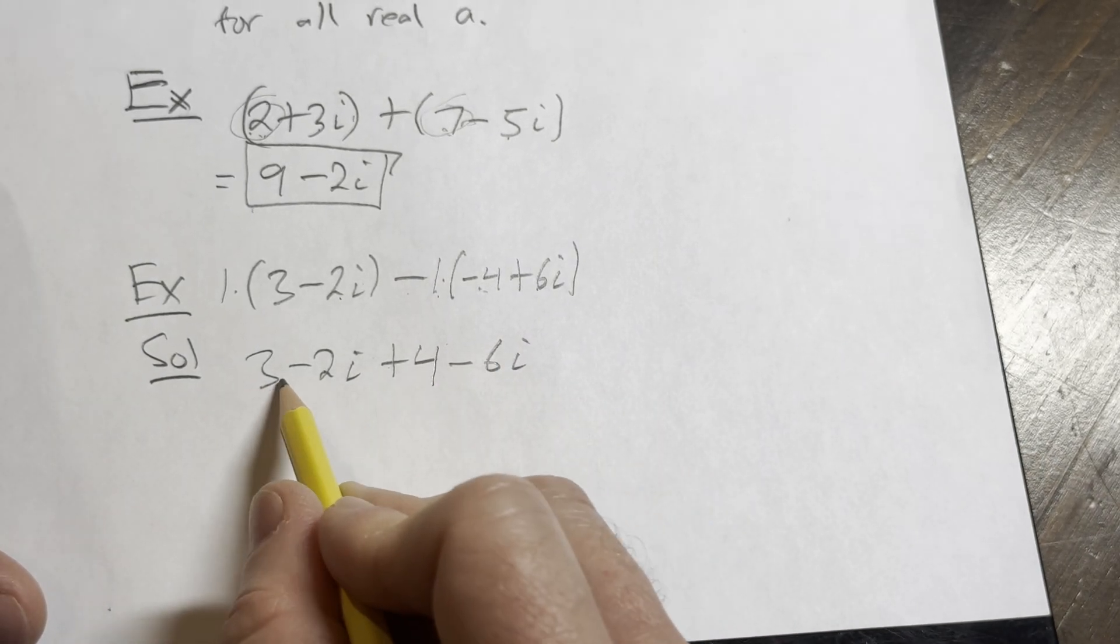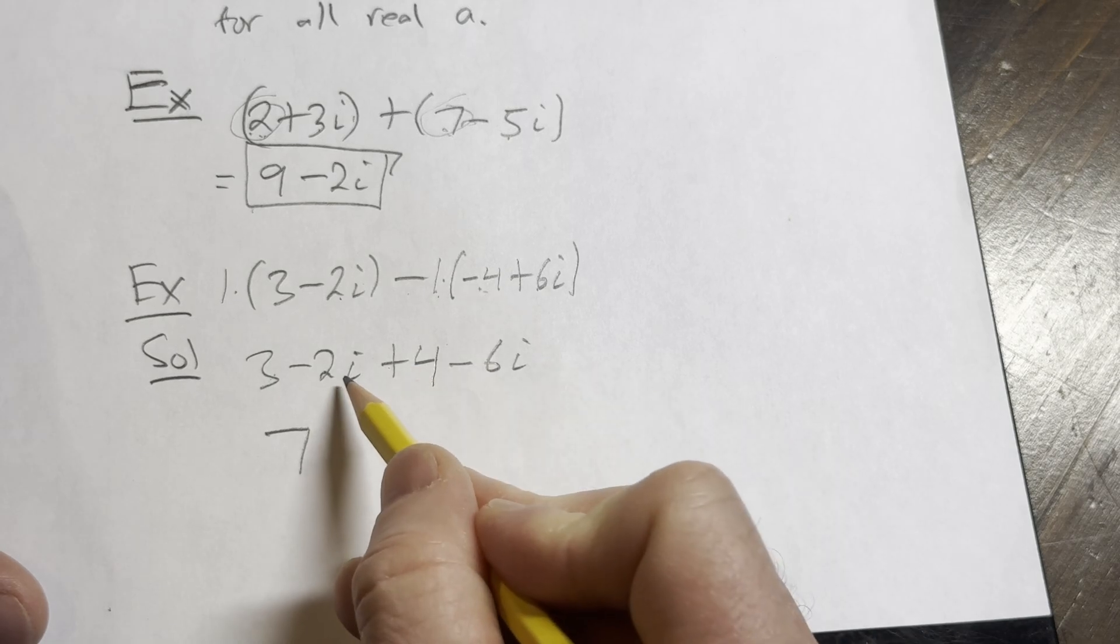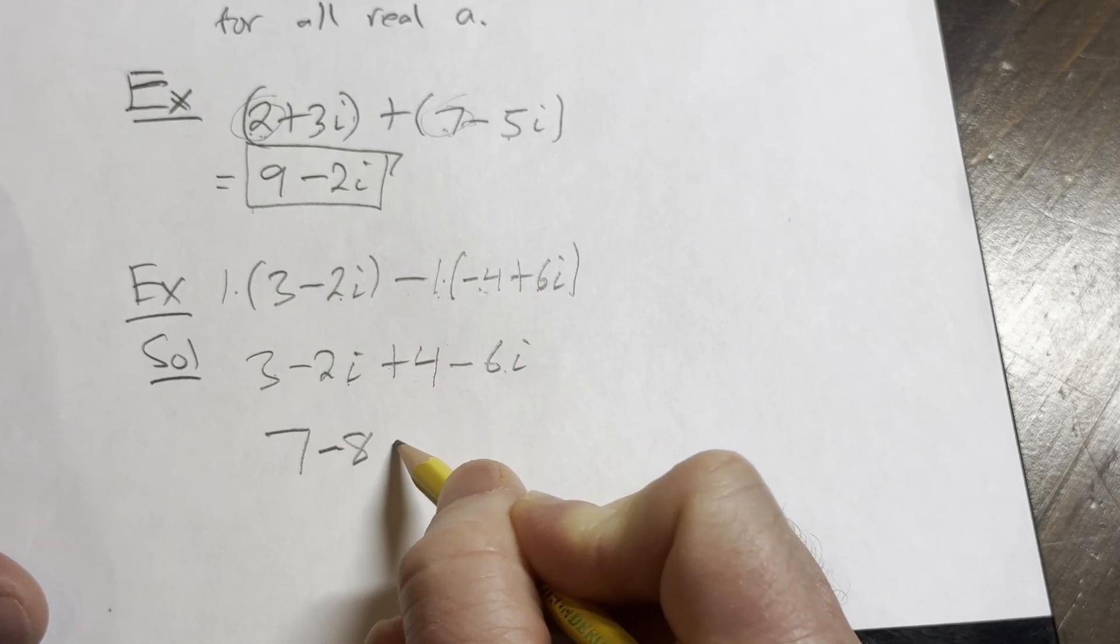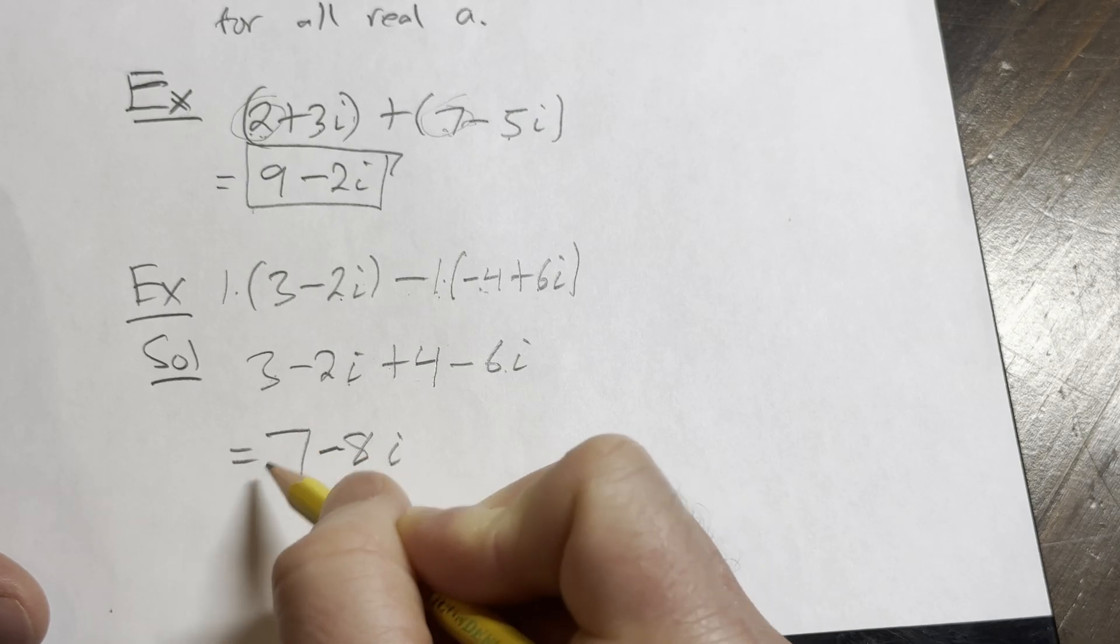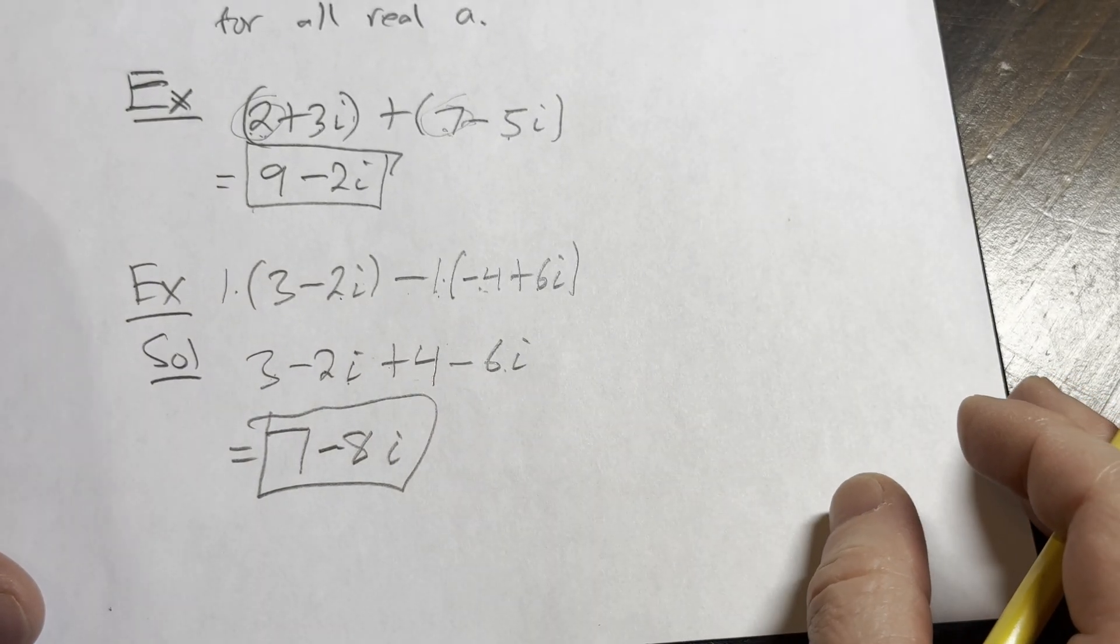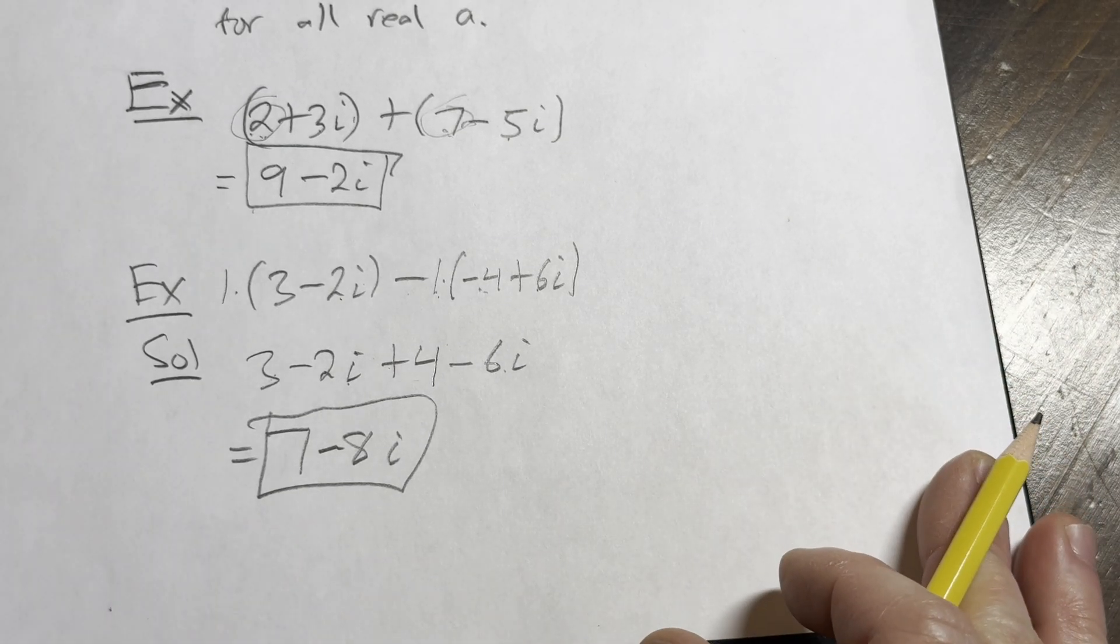Now you add the real numbers. Combine the real parts: 3 plus 4 is 7. And minus 2i minus 6i is minus 8i. So that would be the answer, 7 minus 8i. That's how you add and subtract complex numbers.